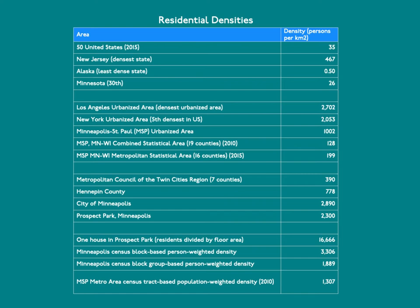The choice of unit — a parcel, a city block, a block group, a census tract — is somewhat arbitrary, but the most important part is internal consistency. Cumulative opportunity accessibility measures address this in a much more systematic way.